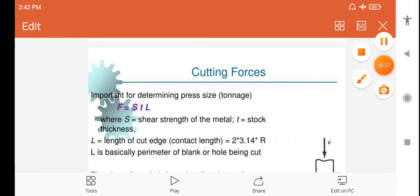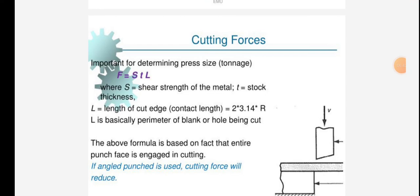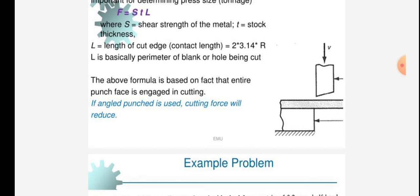Cutting forces: important for determining press size tonnage. F equals STL, where S is shear strength of the material, T is stock thickness, L is length of the cut edge or contact length equals 2 times 3.14 times R. L is basically perimeter of blank or hole being cut. The above formula is based on fact that entire punch face is engaged in cutting. If angled punch is used, cutting force will reduce.